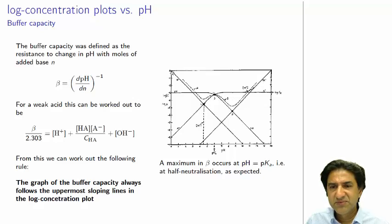Likewise, if the system is really, really acidic, if we add a bit of base, it's still going to be really acidic. So the buffer capacity is very big when it's very acidic, but that's not very interesting either.